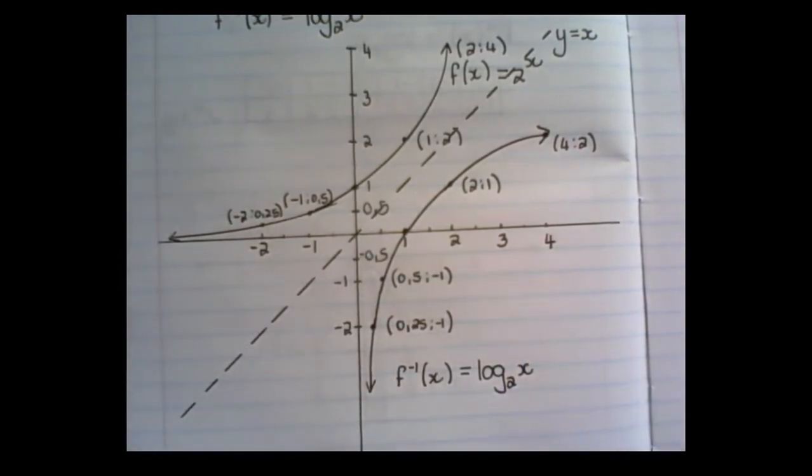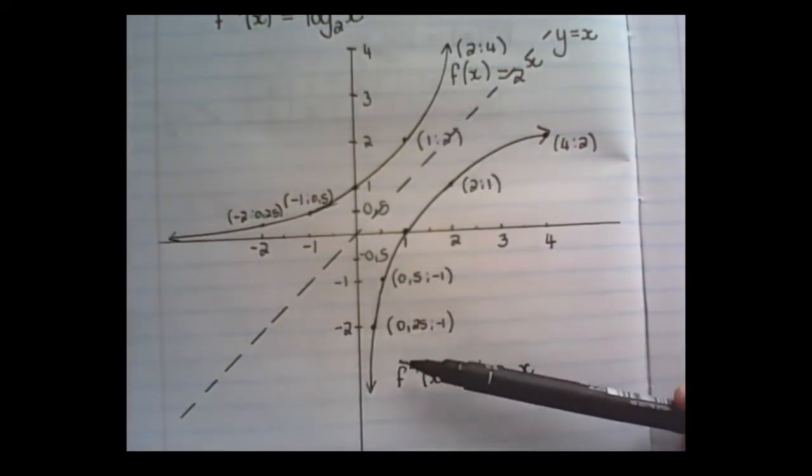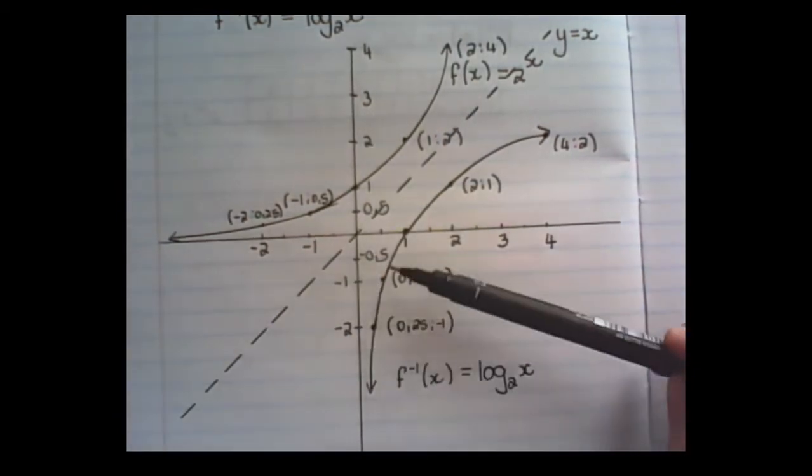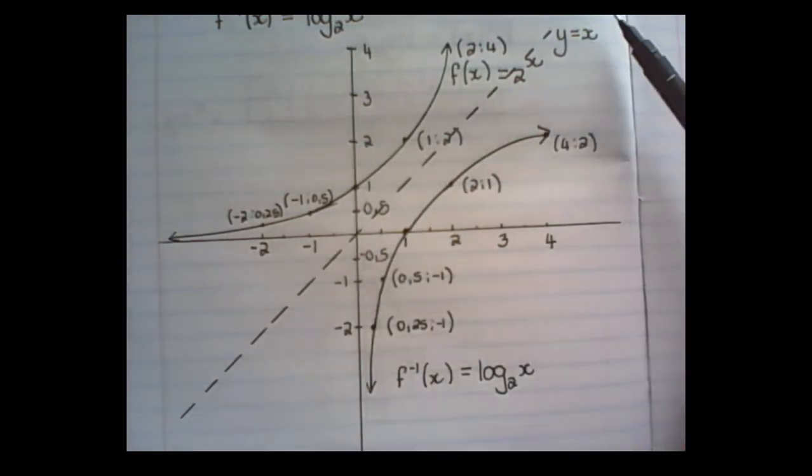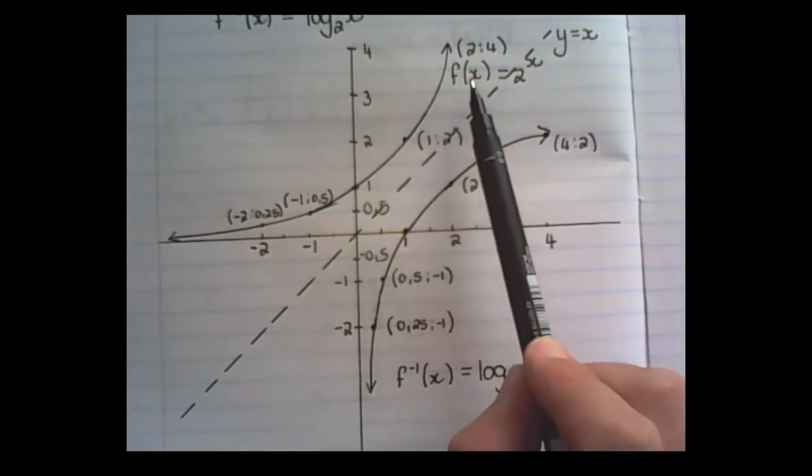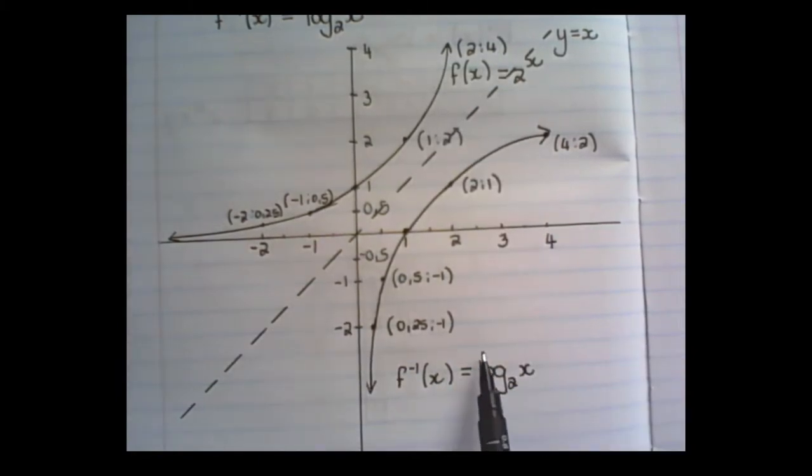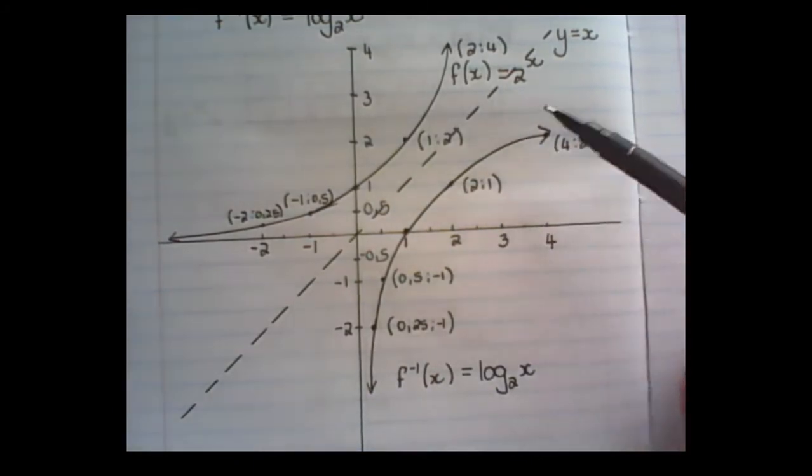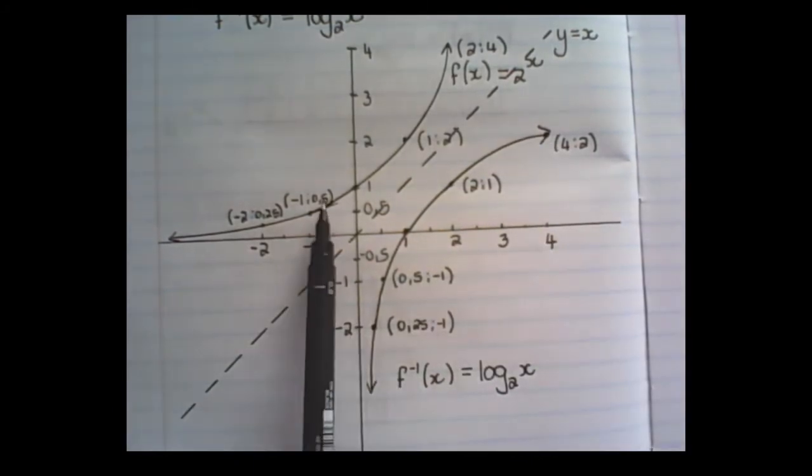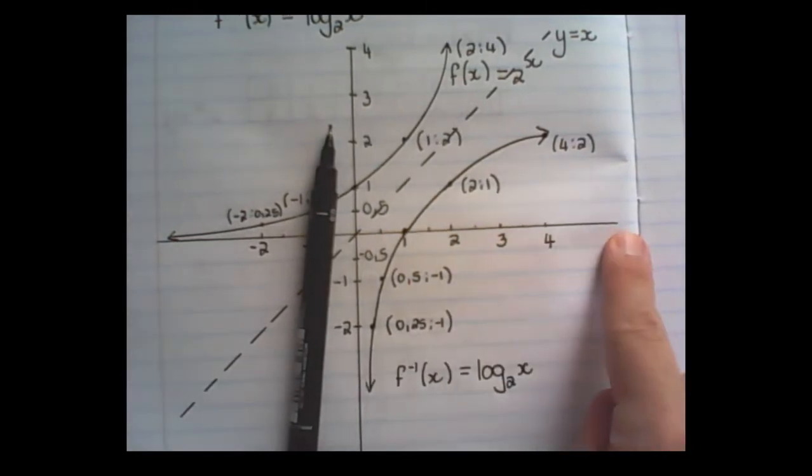So there we have it. The first graph is the exponential function of f(x) and the second graph is its reflection over the y equals x line. And this is the graph of the inverse of f(x), which is the log base 2 of x graph. Notice that this log graph is only on the right of the x-axis.